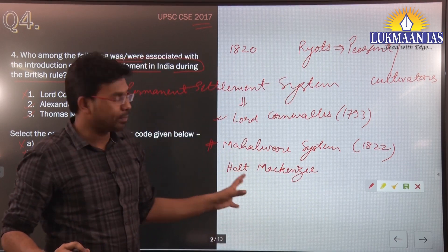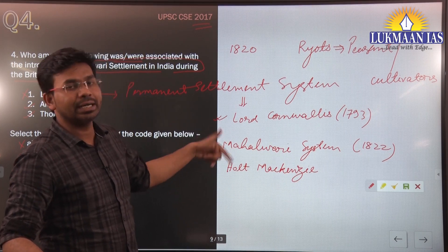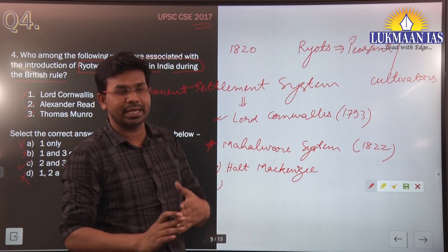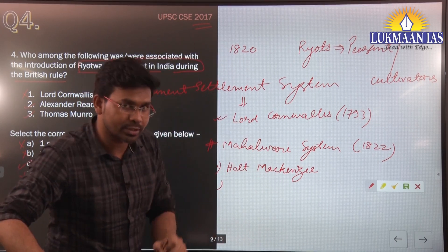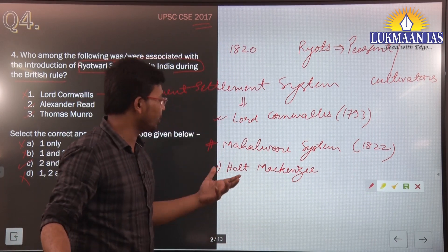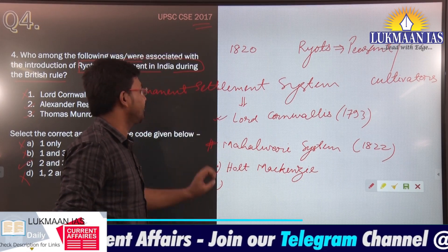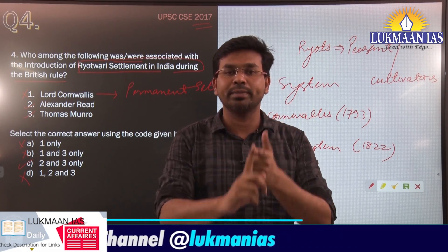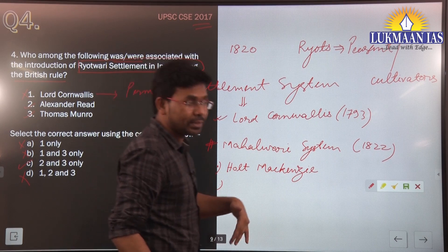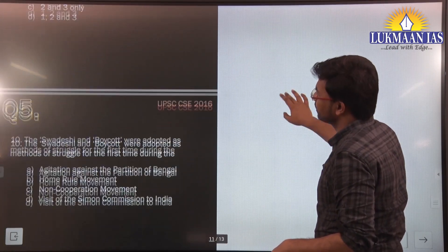The Mahalwari System was introduced by Holt Mackenzie in the North Western Provinces, including Awadh, Agra, and surrounding regions. Under this system, the village headman was the responsible person who would collect rent from the peasants and give it to the British. So in summary, the three land reform measures are: Permanent Settlement System (1793, Cornwallis), Ryotwari System (1820, Reed and Munro), and Mahalwari System (1822, Holt Mackenzie).